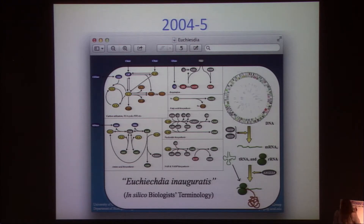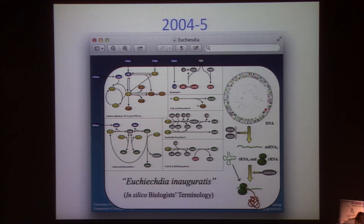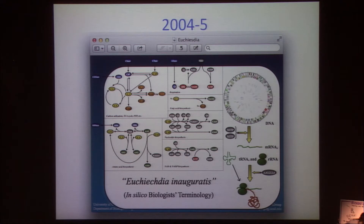Here at UCSD, we decided to try to build a model like this for the simplest cell type there is, which was Mycoplasma genitalium. At that time we didn't know that much about the cell, so we wanted to do a stripped-down in silico version of it. We stepped away from this and pursued E. coli, but as everyone in the room knows, Marcus Colbert, who is now at Stanford, has actually completed the construction of this model.